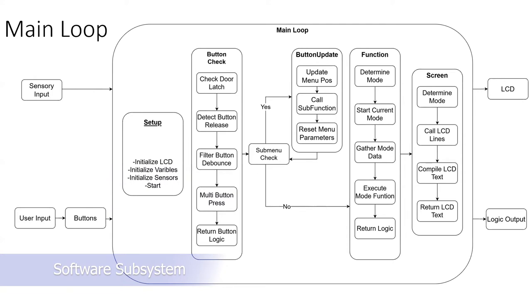The program itself is run around a main loop. A given iteration starts by detecting user input or sensory input and then sends this data into the main loop. The first iteration will run the setup, initializing the LCD and various variables and sensors and starting any peripherals that need to be started. Next, a button check is done to determine if and how many buttons are being pressed or held.